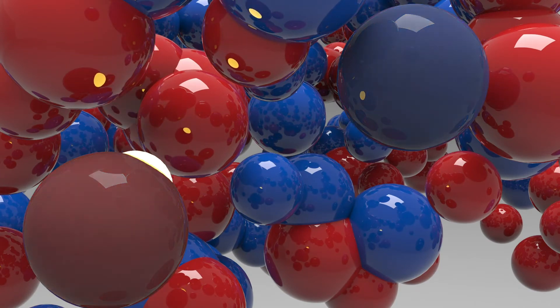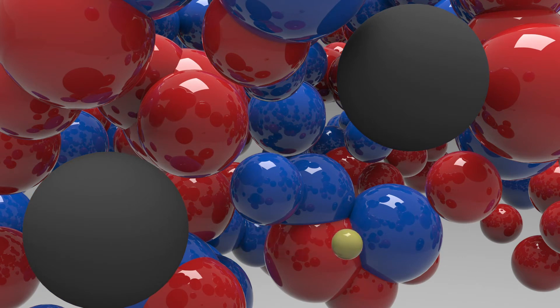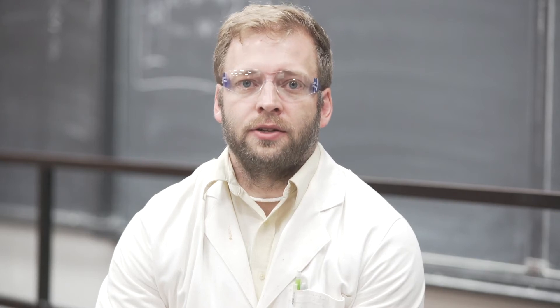The electrons can then pass into a semiconductor like titanium dioxide in this case, which is a cheap, affordable, benign material that can then move these electrons out of the solar cell and into an electrode.